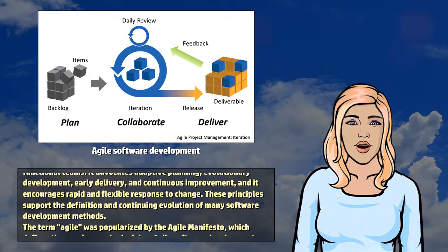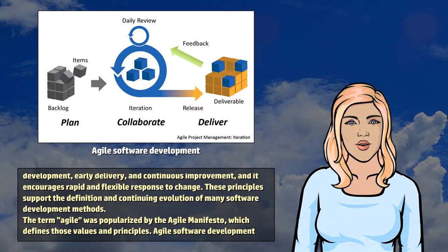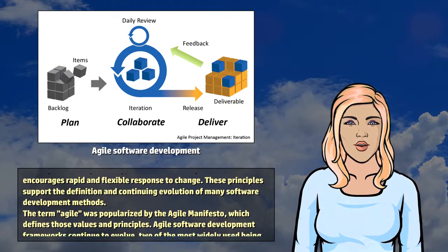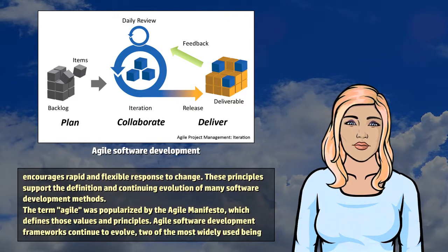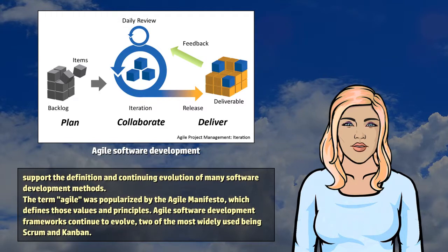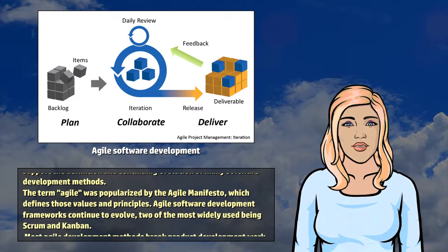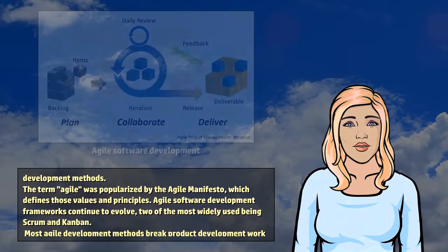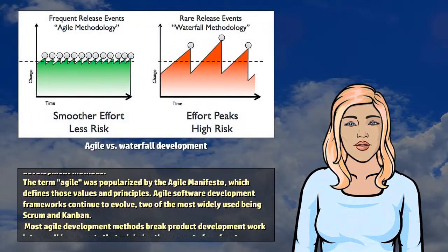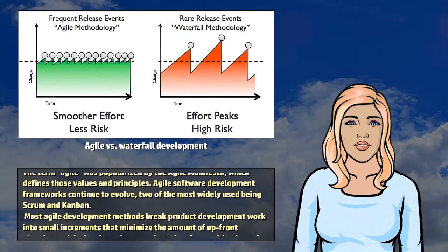The term Agile was popularized by the Agile Manifesto, which defines those values and principles. Agile software development frameworks continue to evolve, two of the most widely used being Scrum and Kanban.